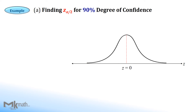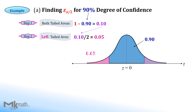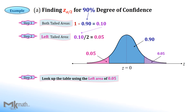Let's take a look at the first example: find the z-critical values for the 90% confidence level. We shade the center area with the given confidence level 90%, or 0.90. Step 1: 1 minus confidence level 0.90 to get 0.10 as two-tailed areas. Step 2: divide the two-tailed areas by 2 to get the one-tailed area. Step 3: look up the table using the left-tailed area 0.05.